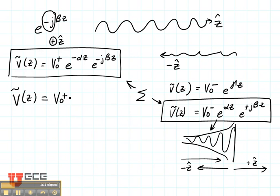So it's V0 plus e to the minus alpha z e to the minus j beta z plus V0 minus e to the plus alpha z e to the plus j beta z. And this is a wave that has positive and negative propagation in the direction of travel.